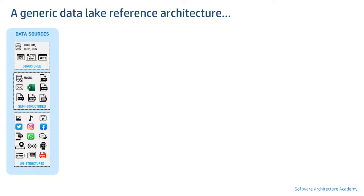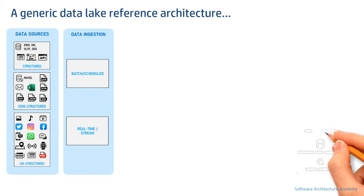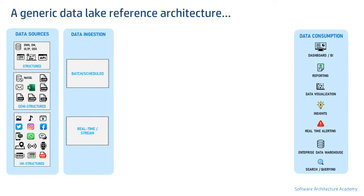Before we get into data layers, let's first touch upon three layers of a big data system that do not constitute a data lake. These are data sources, data ingestion, and data consumption. If you'd like to know more about these layers, I've explained them in my introduction to big data architecture video, link of which is in the description.